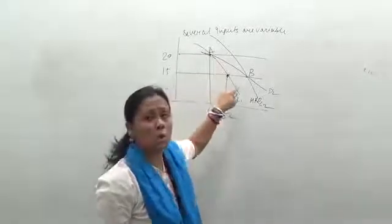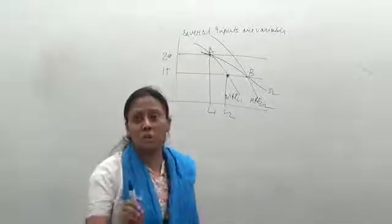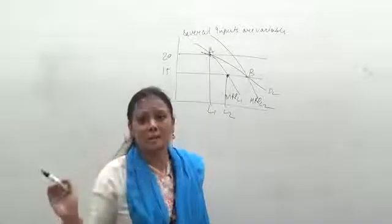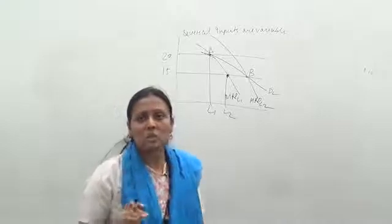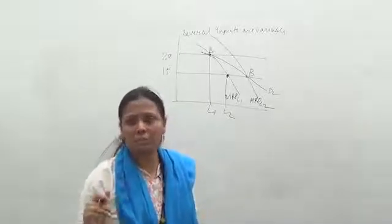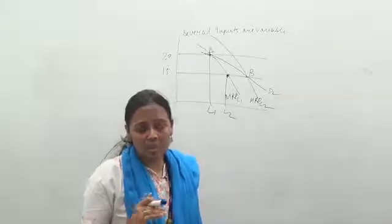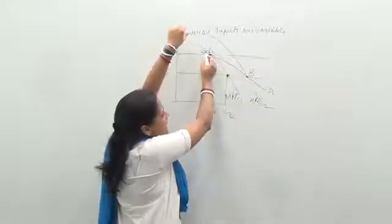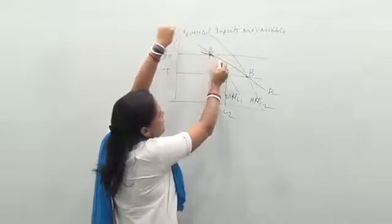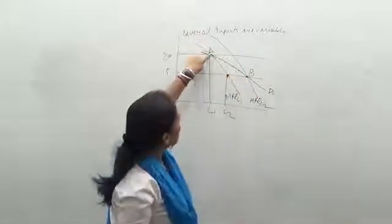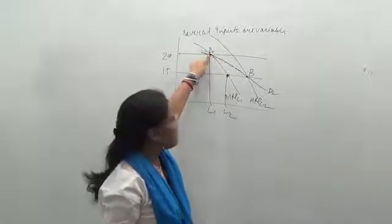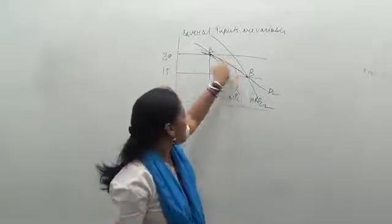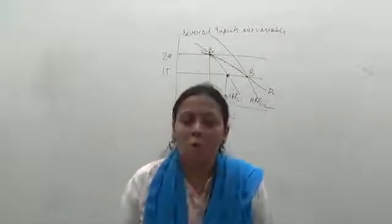The MRPL1 curve only shows the movement along the line, which reflects the influence in the labor market alone. But we are also taking into consideration the shift in the price of labor and its influence on other markets. When the price decreases, MPK increases, MRPL1 shifts to MRPL2. Joining together the original intersection point A and the new point B, we get the demand curve of labor — called DL. This is the demand curve of labor when several factors are variable.